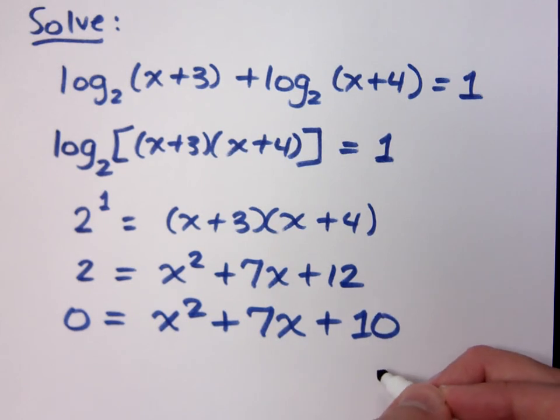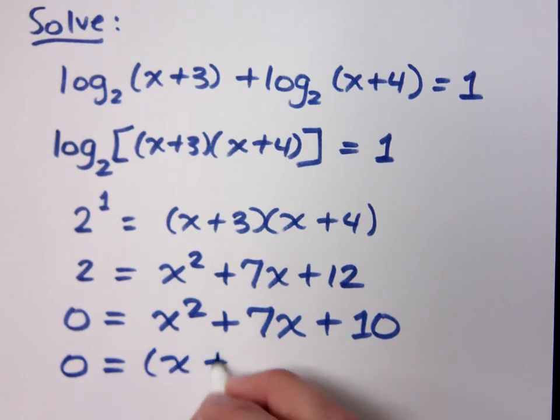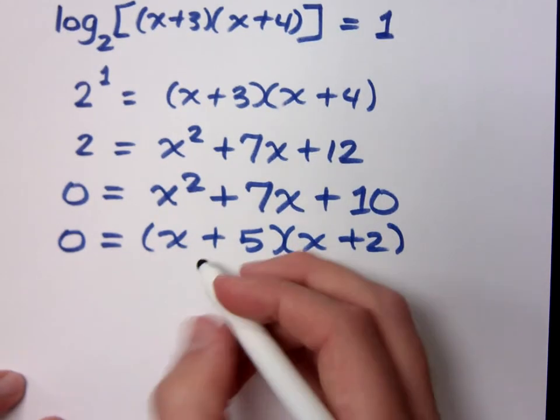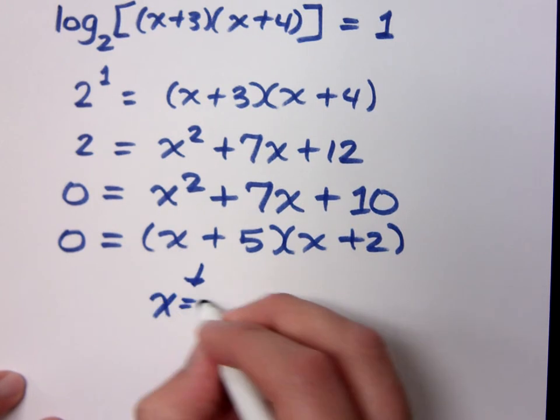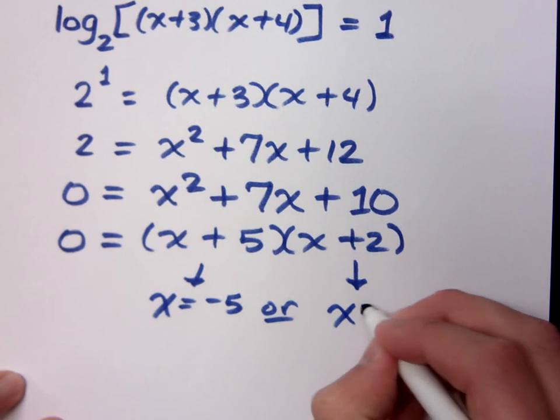It's quadratic. Does it factor? How does it factor? x plus 5 times x plus 2, which tells me that my solutions are what? x equals negative 5 or x equals negative 2.